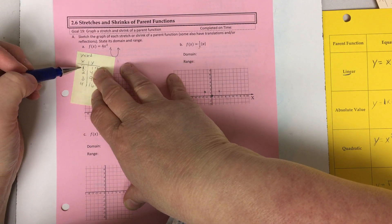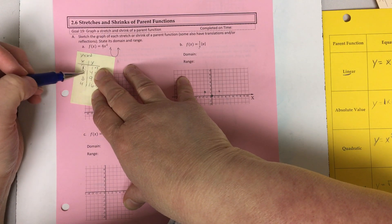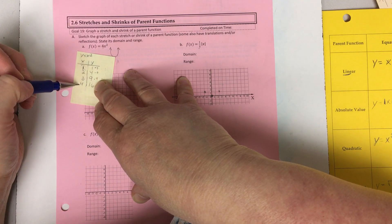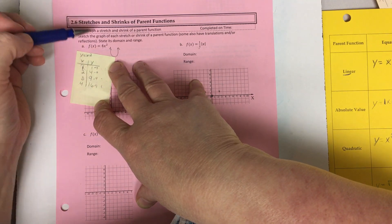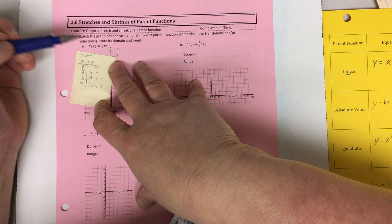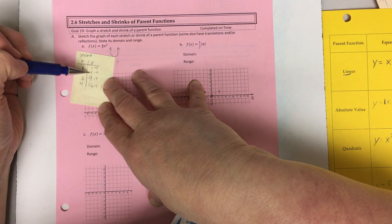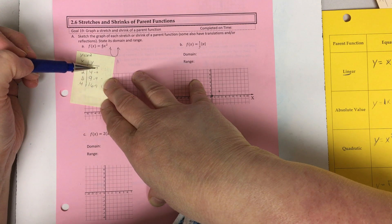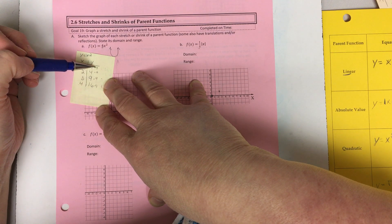So I'm going to look at what it would normally look like. So normally if I went over one I'd go up one, over two, up four, over three, up nine, over four, up sixteen. But because I have a four in front of it I need to multiply all the values that I'm getting out over here by four. So this is going to stretch it.